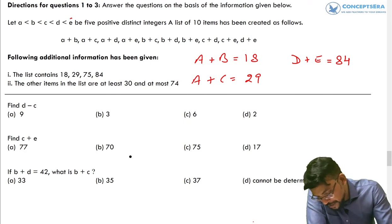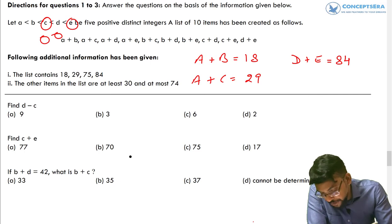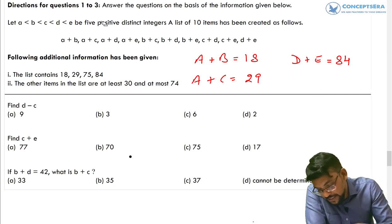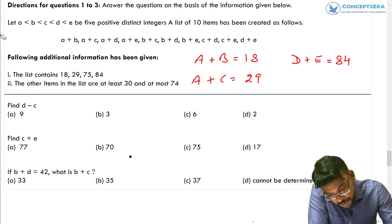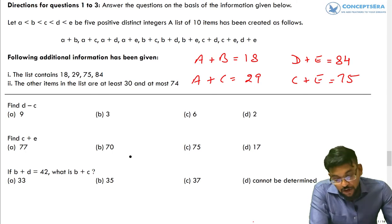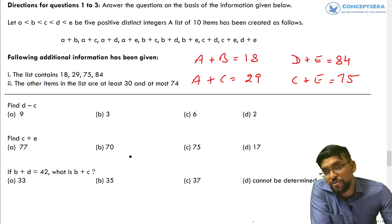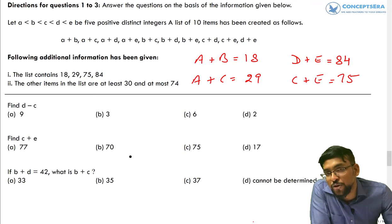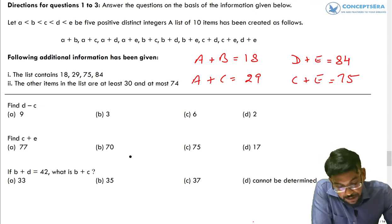And we can see from here second maximum has to be E plus C or D plus C. We know from here C is common. It means E plus C has to be second maximum. So E plus C is given to us 75. Now we can decode this much information from the given table. Now we have to go to the question and solve the question accordingly. So let's move further and solve these questions here.